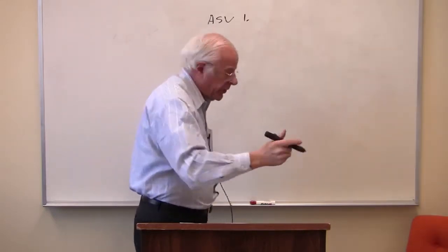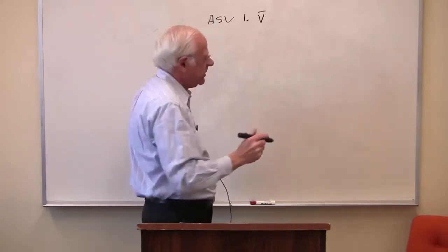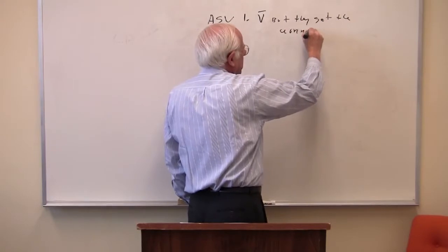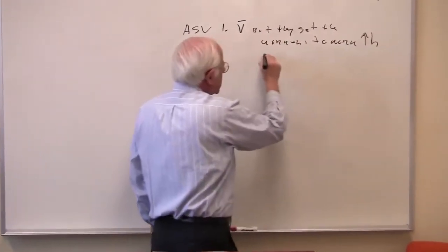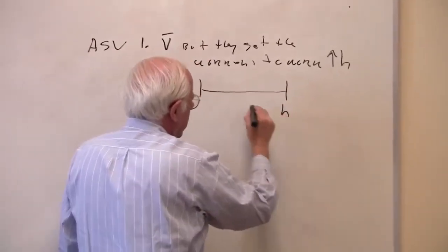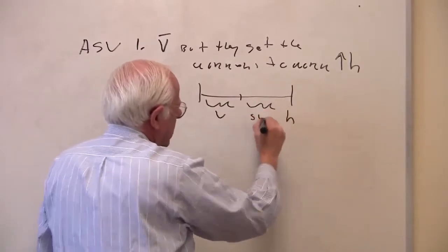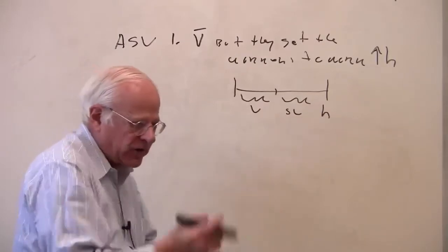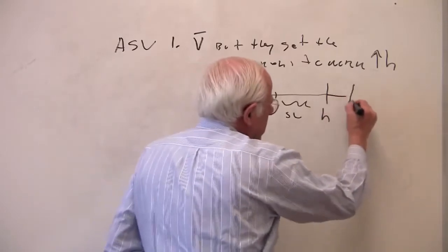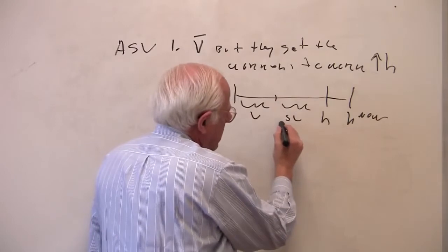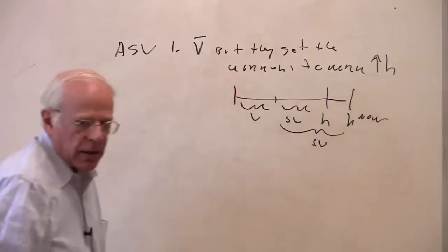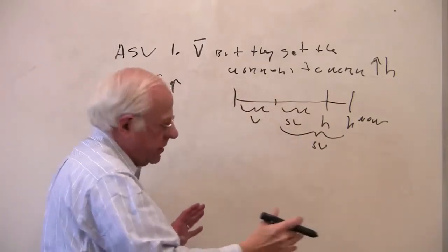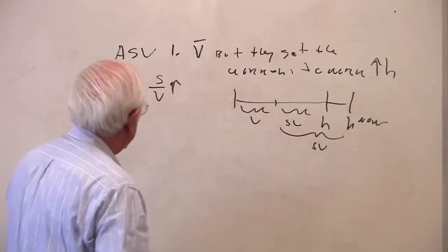With absolute surplus value, what the capitalists do is pay the workers the same value of labor power — the same V — but they get the workers to work more hours. You have the length of the workday, H, and you're paying the workers a V. This is the surplus the capitalists get. By extending the length of the workday, the capitalists are getting greater living labor — the use value of labor power is extended. So absolute surplus value is an example of a rising rate of exploitation if you can extend the length of the workday and pay the workers the same V.